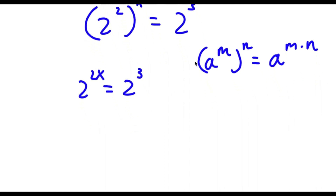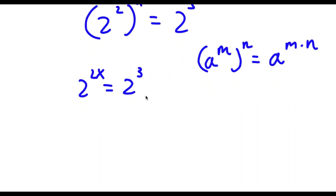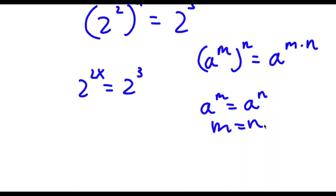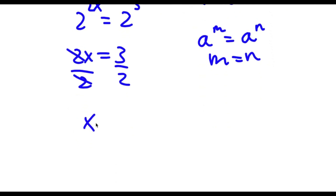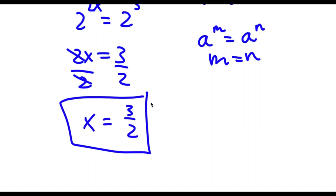Now, if a to the power of m equals a to the power of n, then m equals n. So in this case, 2x equals 3. Dividing both sides by 2, I'm left with x equals 3 over 2. That's my answer.